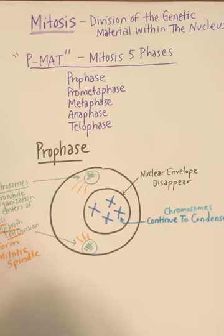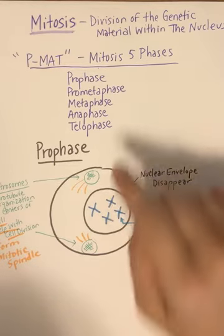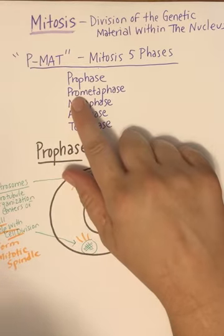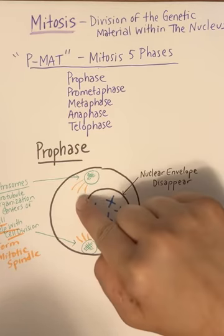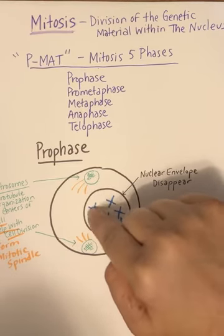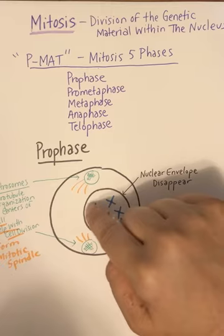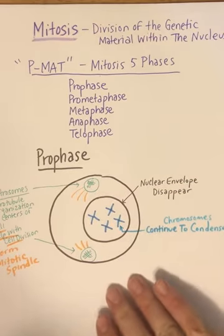That is prophase. Now in prometaphase, we have to attach your mitotic spindles to your sister chromatids or your duplicated chromosomes.